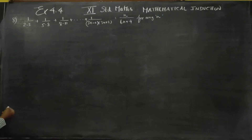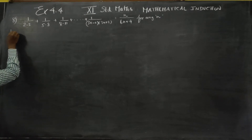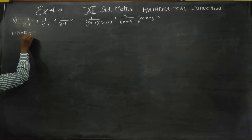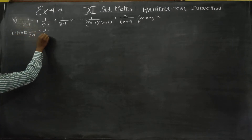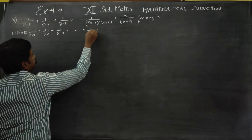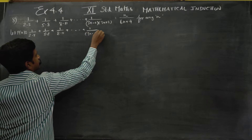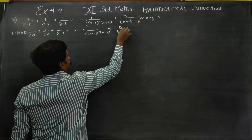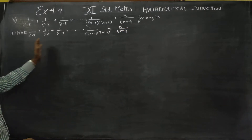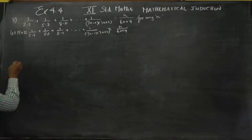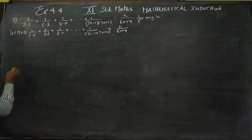We shall start the sum. First we have to name this. Let P of n denote this statement. P of n is the statement name — that is the statement for any natural number. We can start with n is equal to 1.